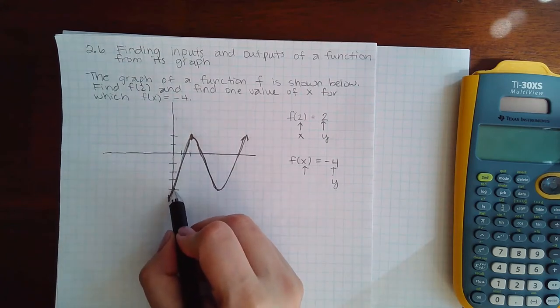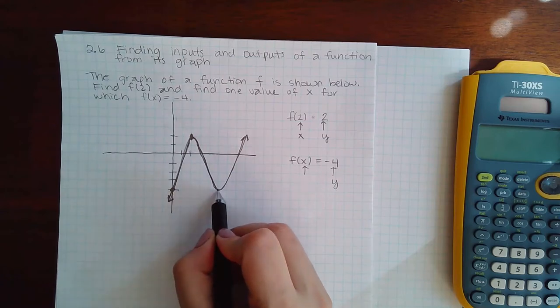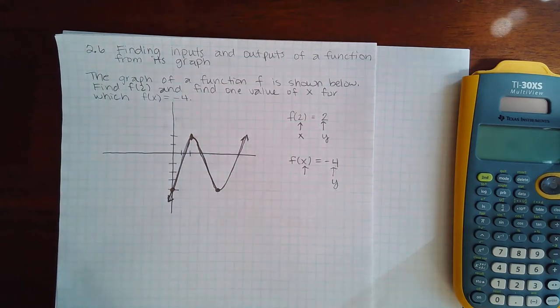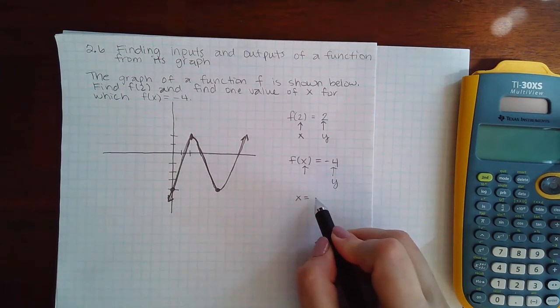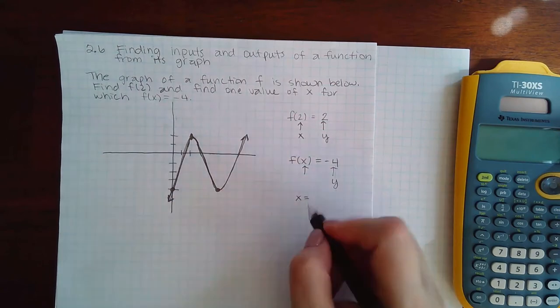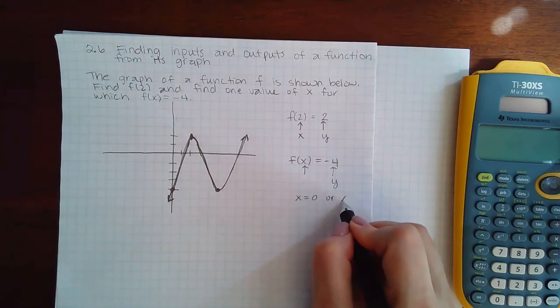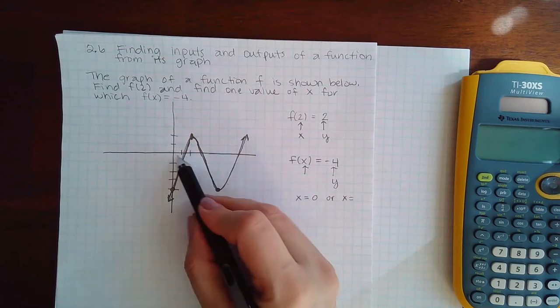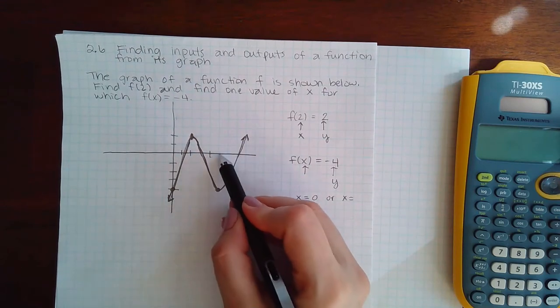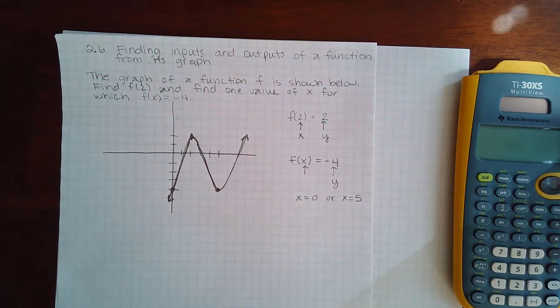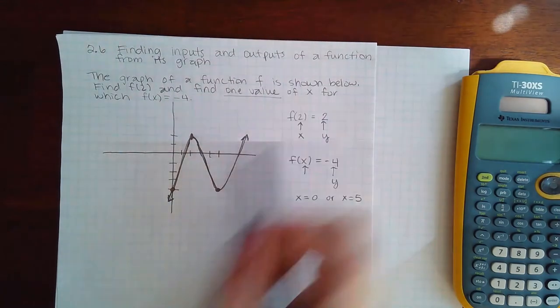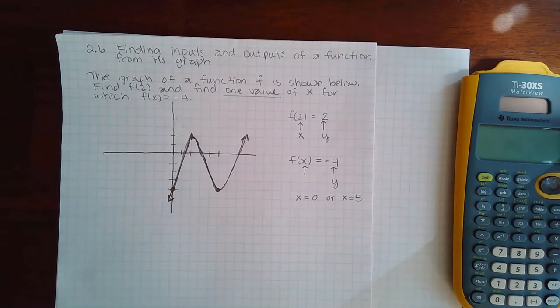Now I actually land on the graph here but I also notice that there's a coordinate over here. So there's actually two answers for this. X could actually equal here, the x value would be 0, or x could equal here, the x value is 1, 2, 3, 4, 5. So either one of these answers would be accepted but it did say just find one value, so you choose which one you want to pick.